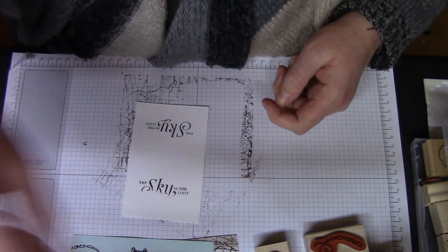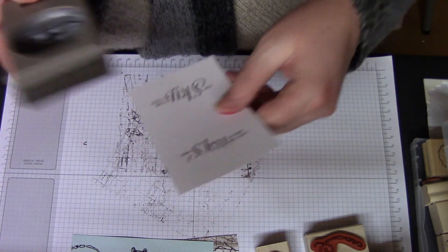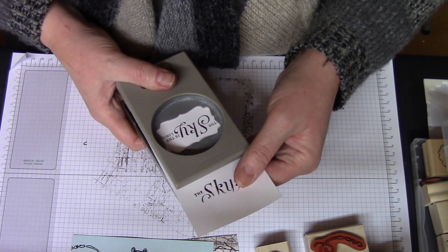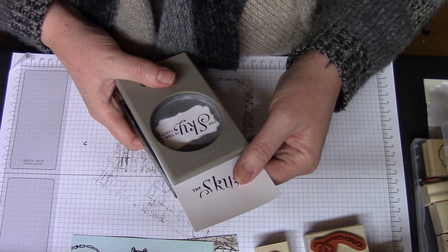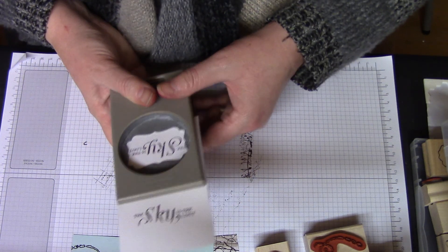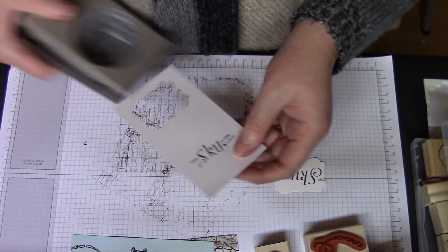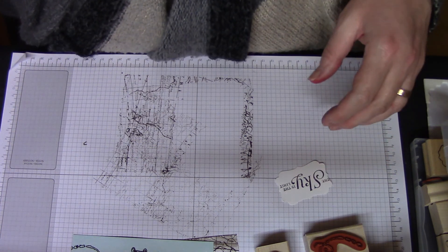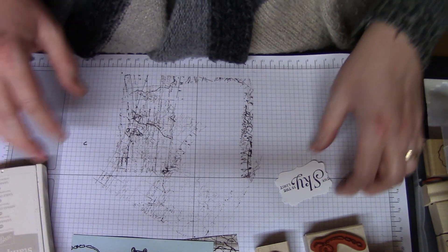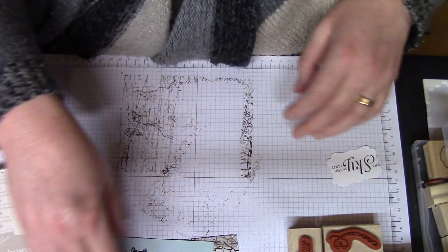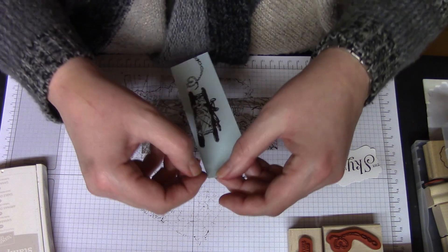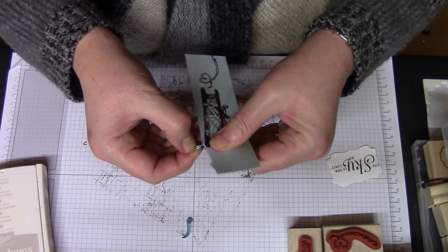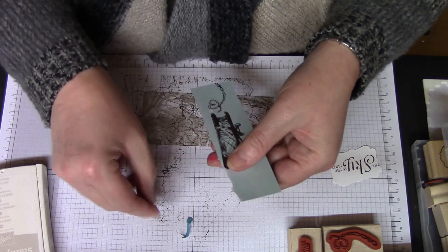We can punch this out and then we have a bit of fun with the grunging. I'm using the Label Punch here to punch this out.